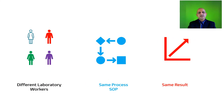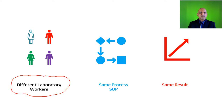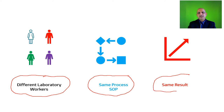This is a graphical representation of what I have just mentioned. In any laboratory facility, we have different individual laboratory workers — each of them has their own knowledge, skills and abilities. They conduct the same process using an SOP, and ideally, a good SOP should result in the same output or the same result.